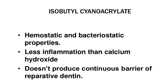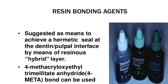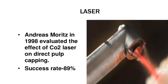Resin bonding agents are suggested as a means to achieve a hermetic seal at the dentin-pulpal interface by means of a resinous hybrid layer. Formed with acryloyloxyethyl trimellitate anhydride (Formeta Bond), can be used on exposed pulp.